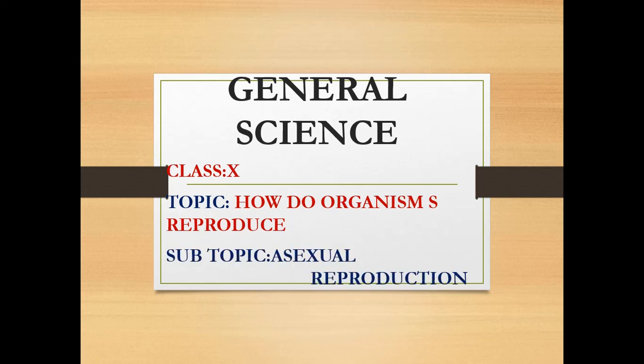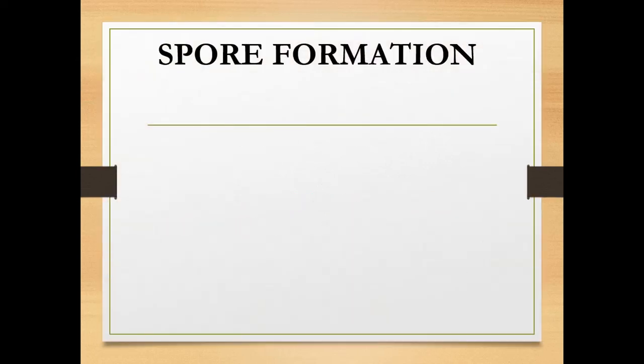Good morning children. In the last video we have seen about three different modes of asexual reproduction: fission, budding, regeneration and fragmentation. So, we can see the next type of asexual reproduction, that is spore formation.